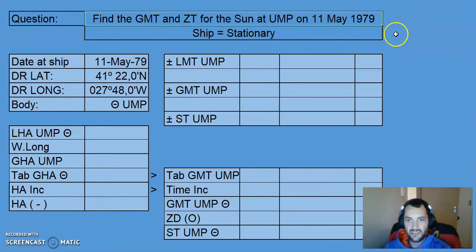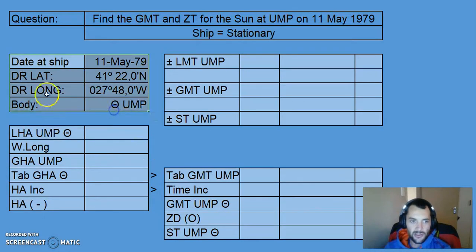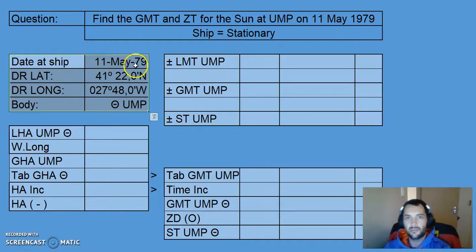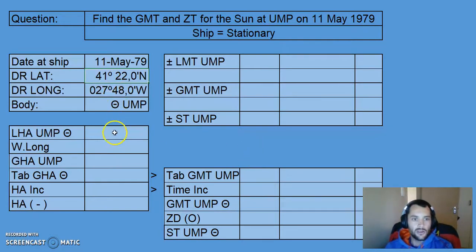This will be whilst the ship is stationary, so we won't be working any vectors in this case. All the information given in the question is highlighted in the column on the left. The date is 11th of May, the DR latitude is 41 degrees 22.0 minutes north, and the longitude is 27 degrees 48.0 minutes west.